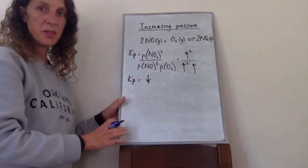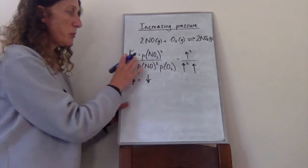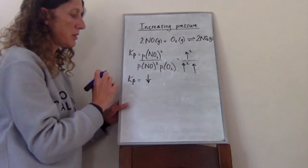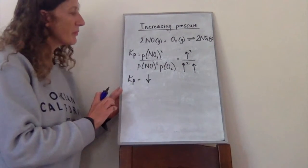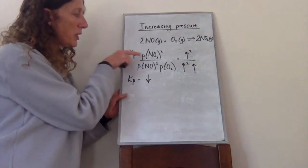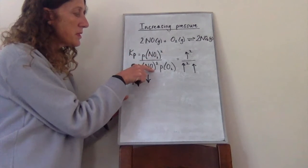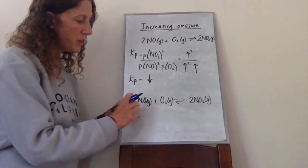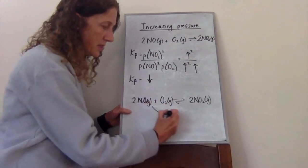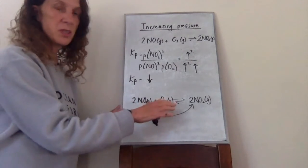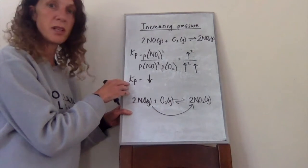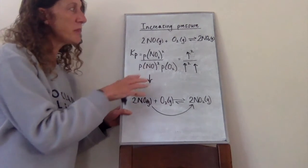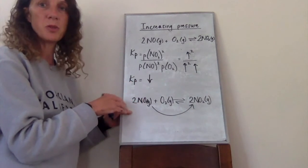We know that Kp can't go down, so in order to re-establish Kp to a higher value, the numerator needs to go up and the denominator values need to go down. For that to happen the equilibrium has to shift to the right-hand side, in order to re-establish Kp as the original value. Whatever we've done for Kp, exactly the same principle applies to Kc.